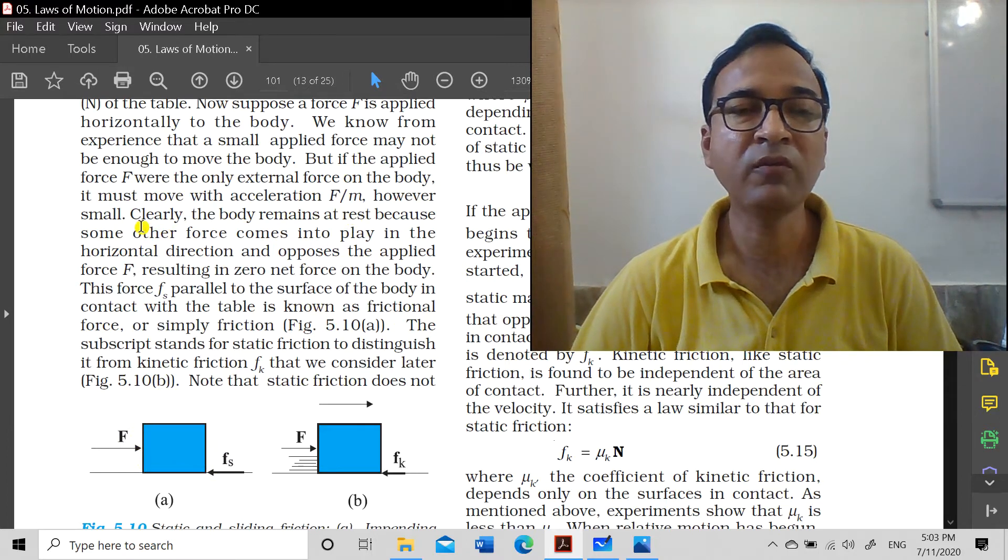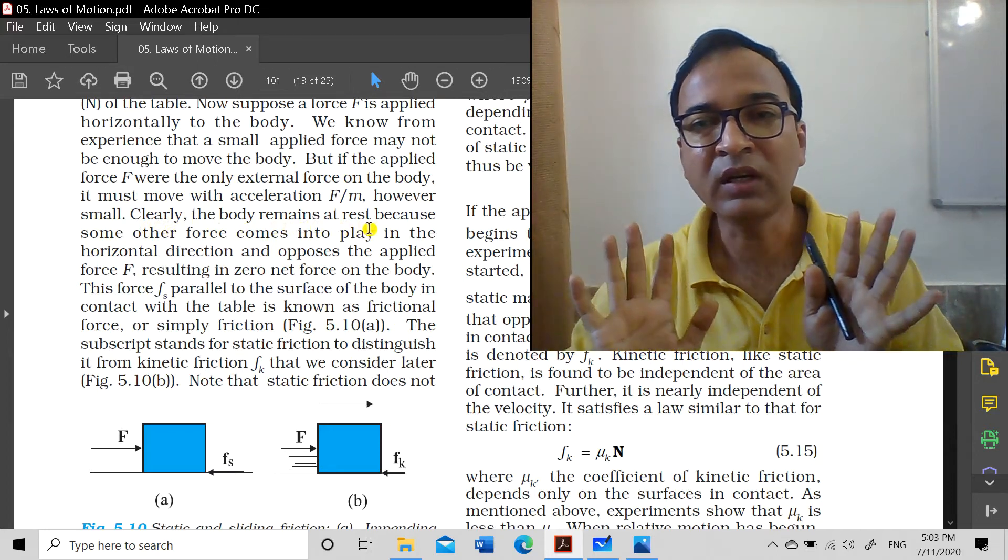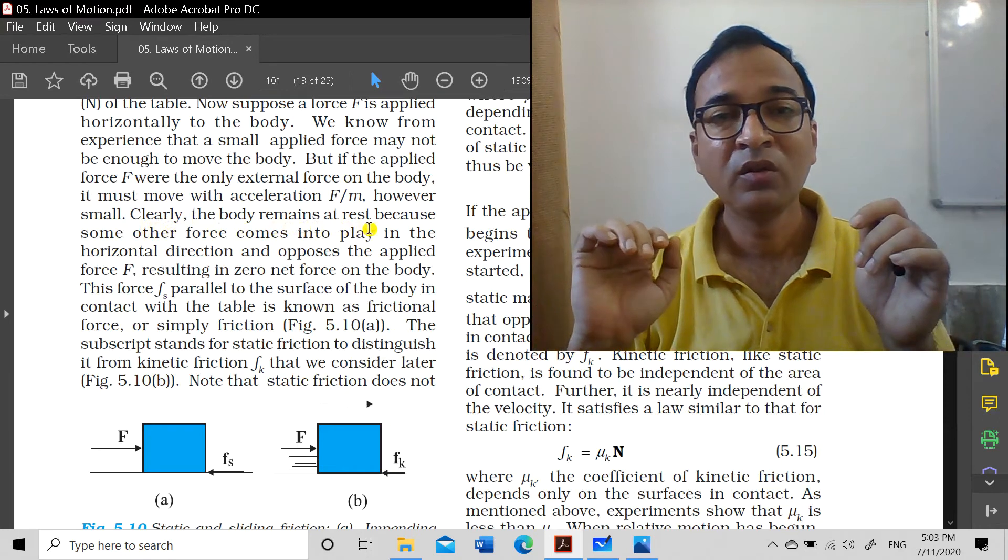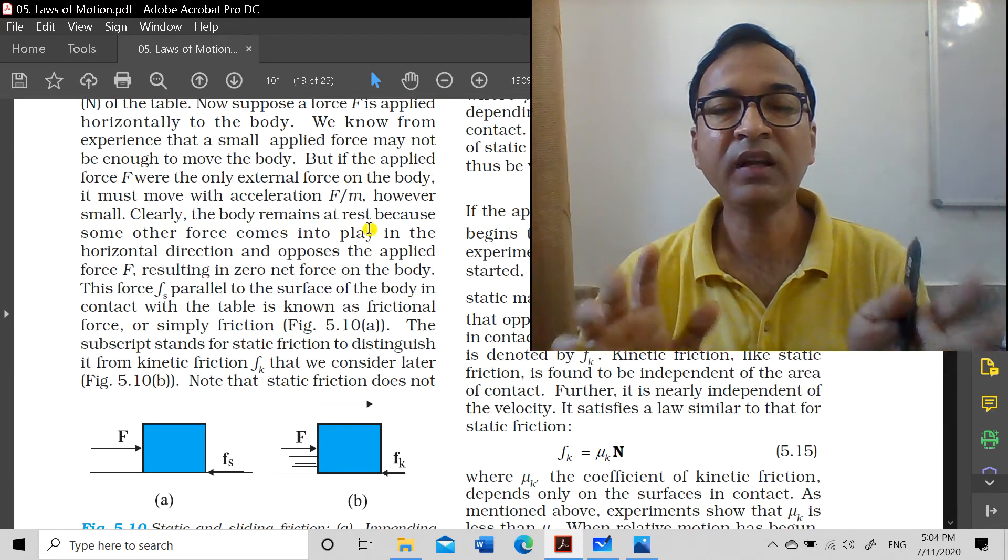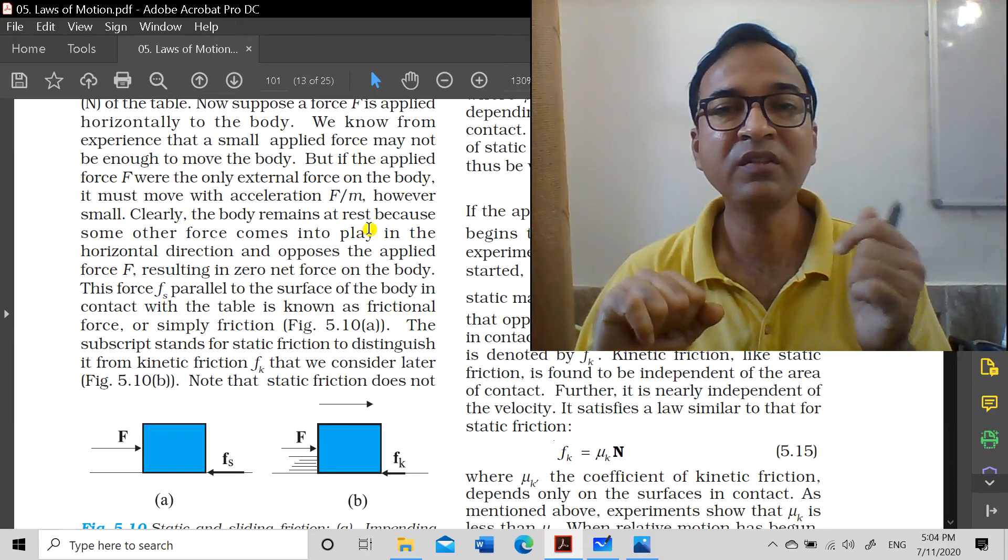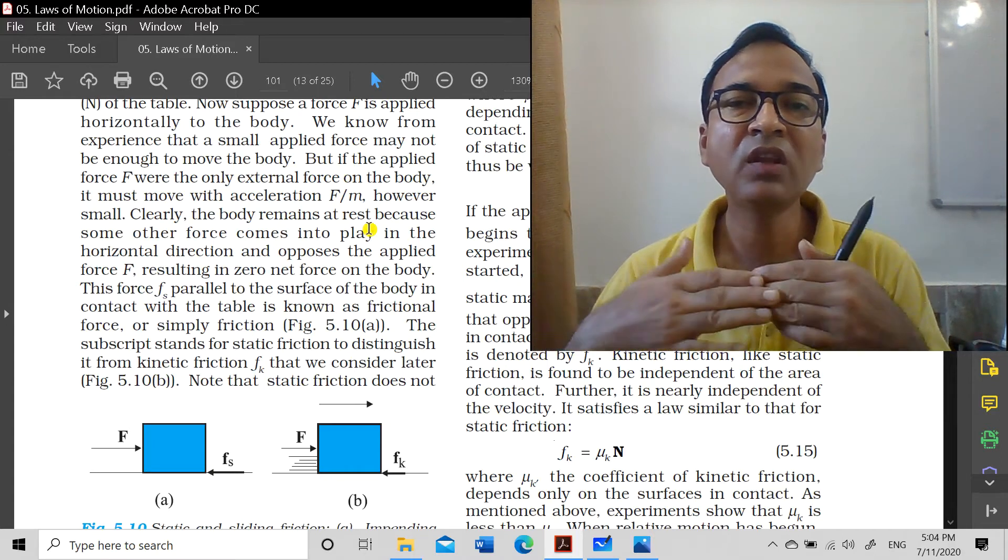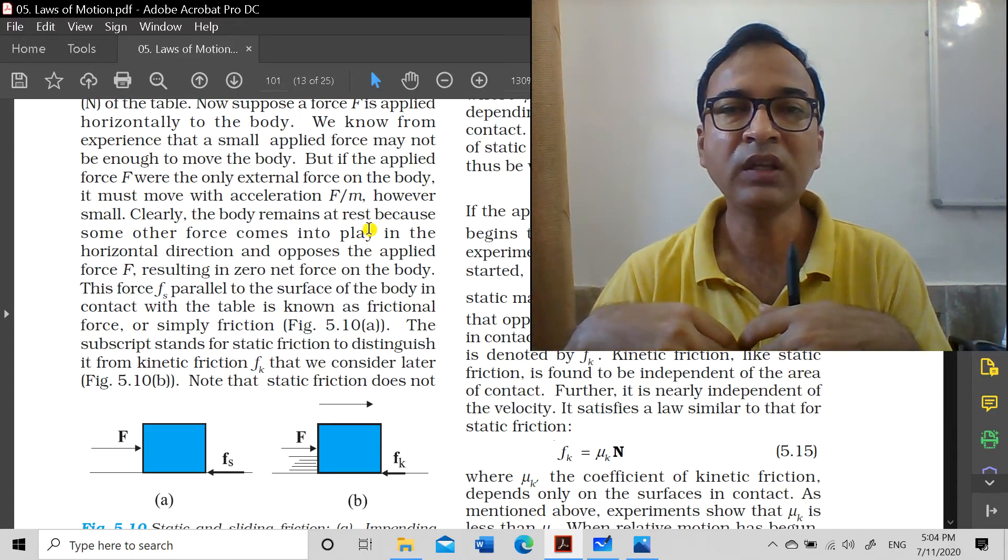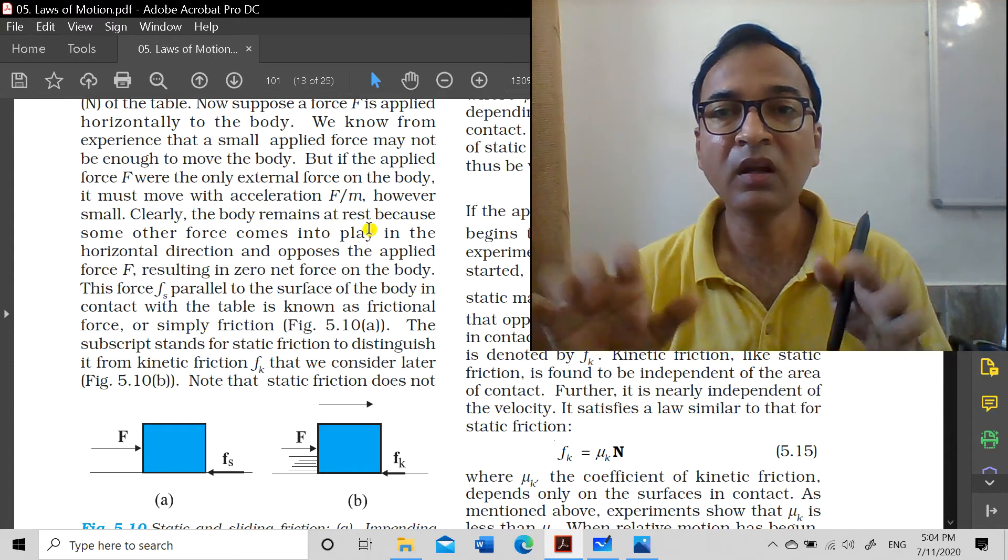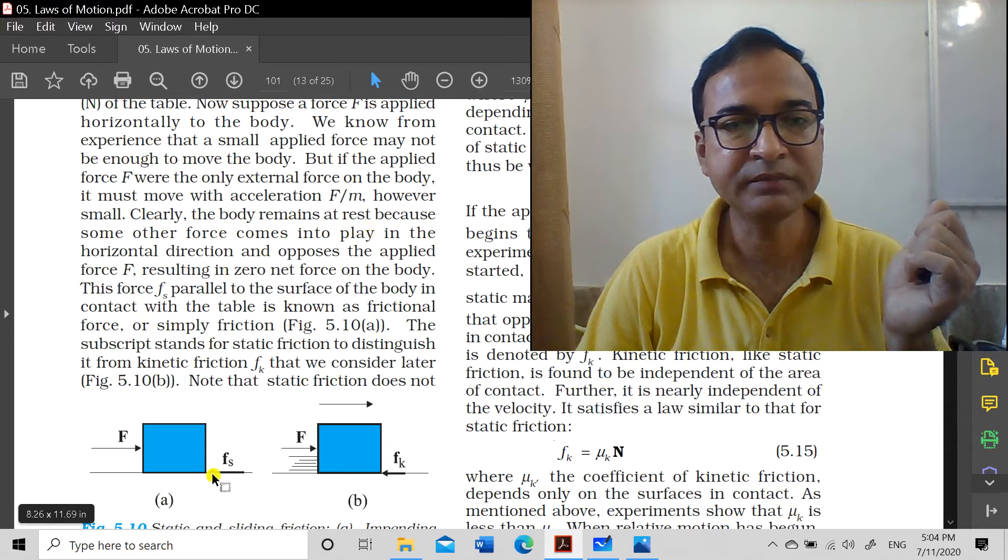If you applied force F and there was no other force, the body should accelerate, however small the force. Clearly the body remains at rest and doesn't start moving initially. Like when you try to move a fridge - initially it doesn't move when you apply force, but as you increase the force gradually, there's a condition after which it starts moving. So something was opposing it, and that opposing force was friction, shown here as fs.